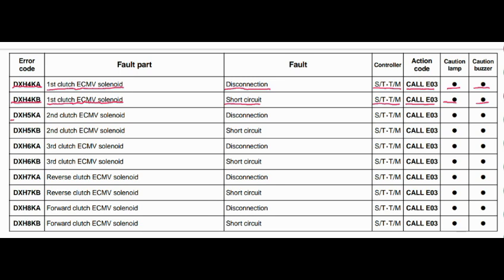Error code DXH5KA. The faulty part is the second clutch ECMV solenoid. The fault is disconnection. The steering and transmission controller is related to this fault. Action code is E03, caution lamp will blink, and caution buzzer will beep.